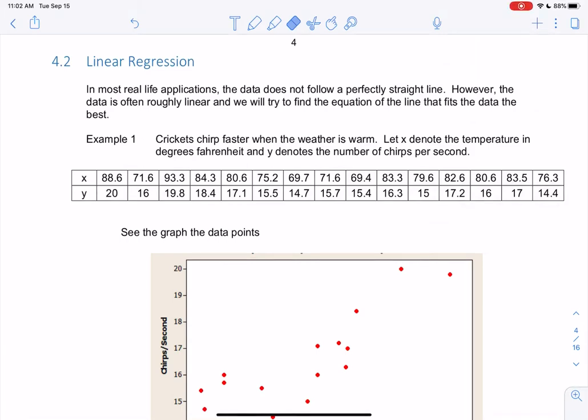All right, so we looked at linear equations in 4.1, just graphing them. Linear regression is going to tell us how to find these lines, find the equation of a line. In most real-life applications, data will not follow a perfectly straight line. However, we might have roughly linear data, which we saw in the last section. And so we'll find an equation that fits best, and that's what regression is.